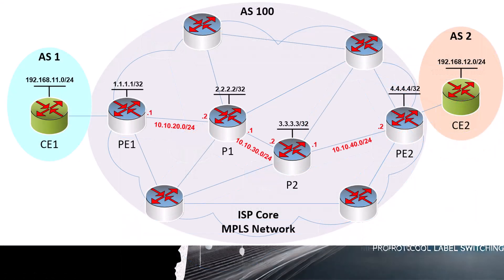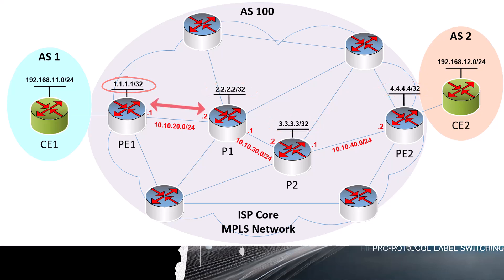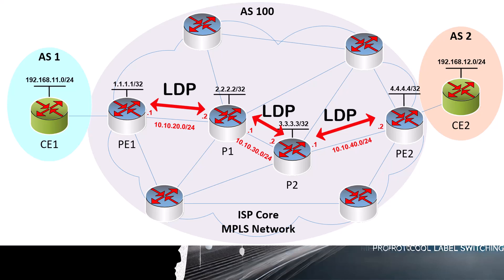Next, we configure the PE and P routers within the ISP infrastructure with OSPF, such that all routers within the topology can find each other and ping each other. In this configuration, we ensure that the loopbacks of all devices are also reachable by advertising them via OSPF. This is vital because ultimately what we want is for LDP adjacencies to form between MPLS-enabled routers, and LDP adjacencies will always form between the loopback addresses by default, so they should be advertised by the IGP and reachable to each other.